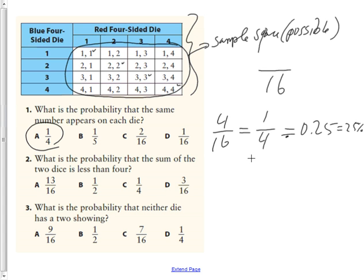Question 2 says, what's the probability that the sum, which means addition, the sum of the two dice is less than 4? So if I take my highlighter, and I highlight all of the sums, add those two digits together, that is less than 4. It can't be equal to 4, but less than 4. Those are the only numbers that add up to be less than 4.